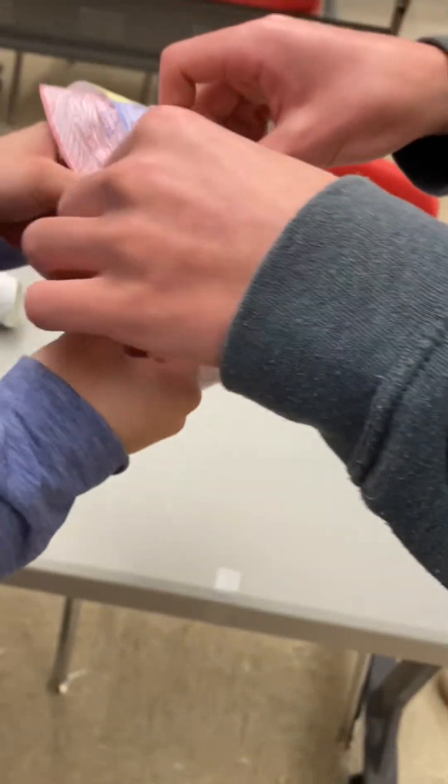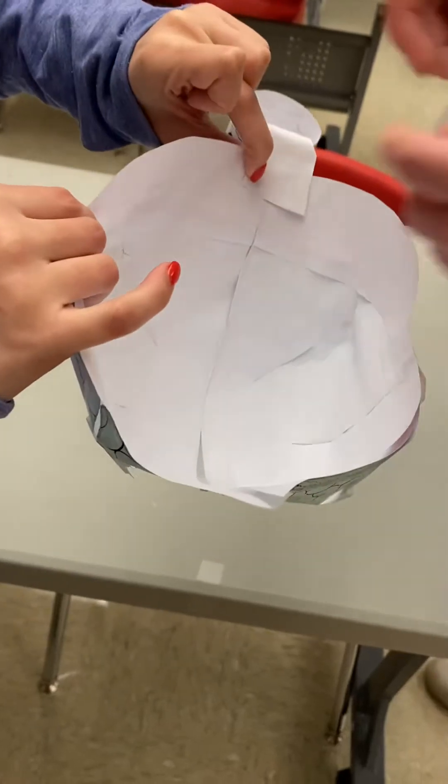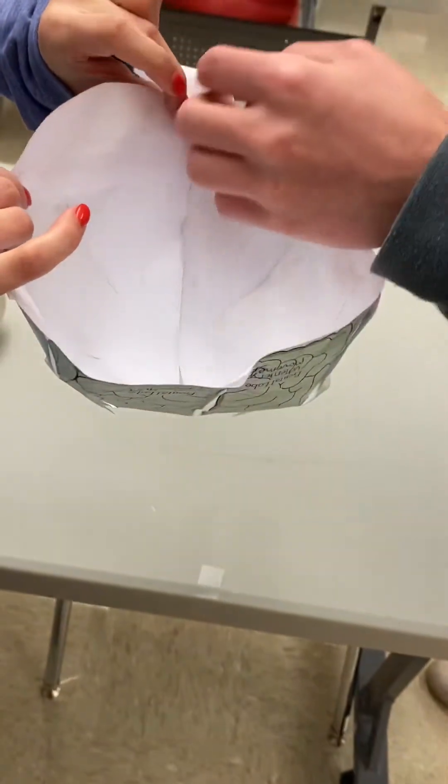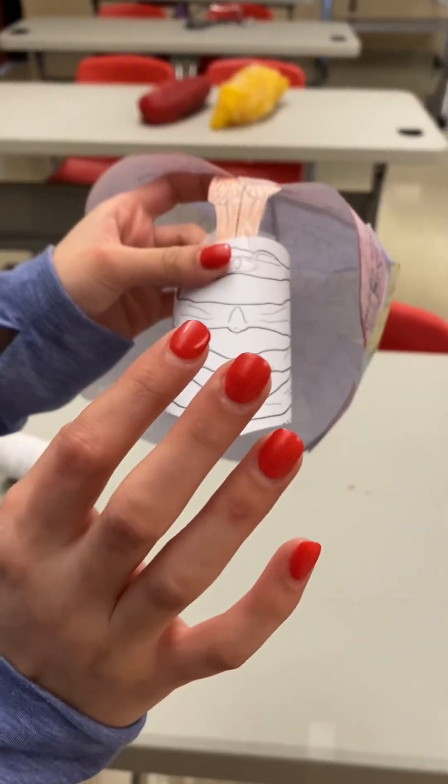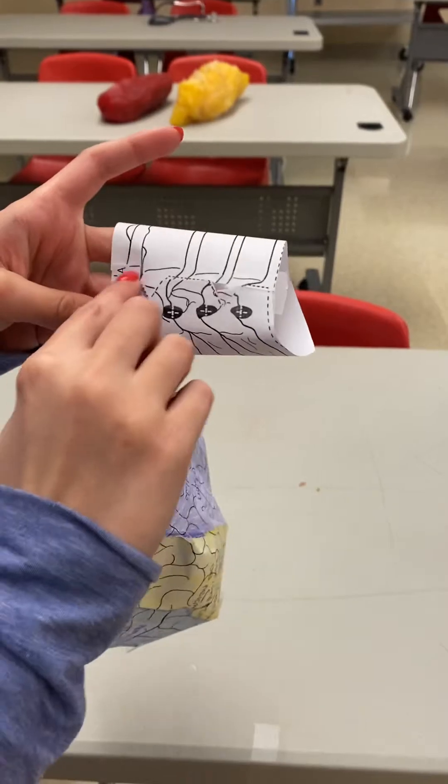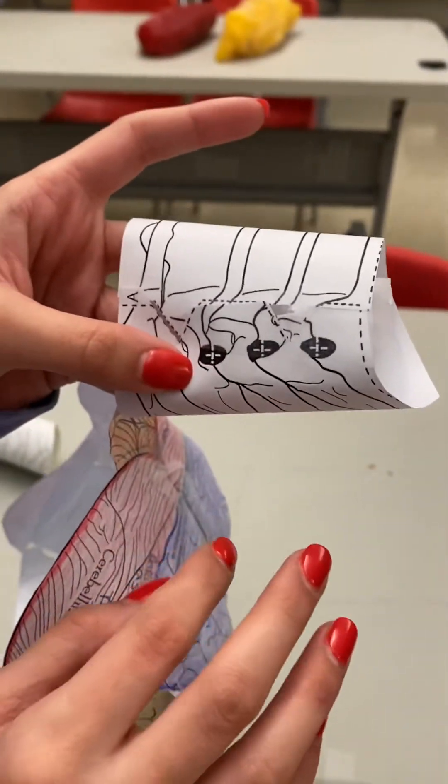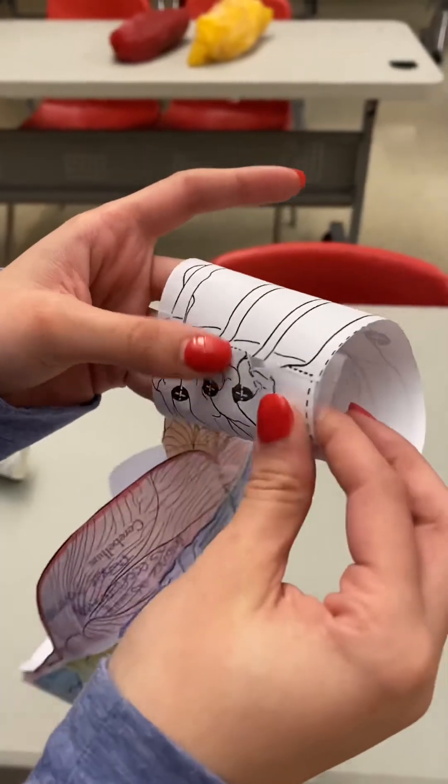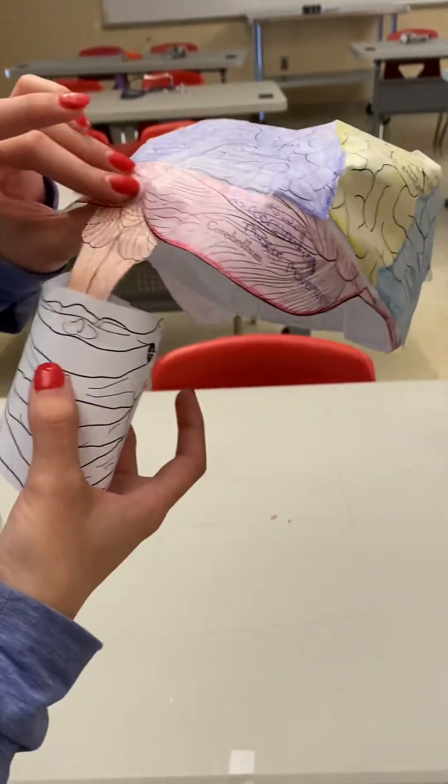And then for the vertebrae, you're going to want to be able to cut these out because these are supposed to be able to fit into each other. So make sure you cut these out, because if you don't cut them out it's going to look not the best. And then after you cut it out, you're going to want to tape the brain stem together to this, and then this goes on for there. That's it.